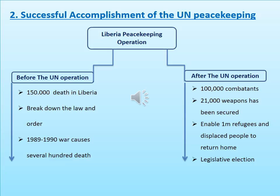You're going to see on the slideshow that before the UN operation in Liberia, they lost a lot of people — around 150,000 dead — and law and order had broken down. The war from 1989 to 1990 caused further deaths. But after the UN operation, around 100,000 combatants were disarmed and 21,000 weapons were secured.